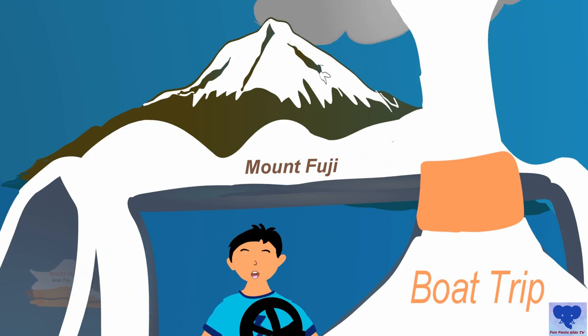Hello everyone, welcome to Fun Facts Kids TV. Do you know there are about 500 active volcanoes in the world today which can erupt anytime? Between 50 to 70 volcanoes are erupting every year, and about 160 volcanoes have erupted in the last decade.